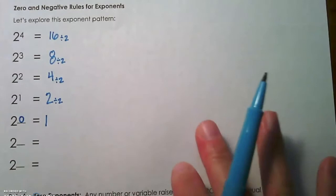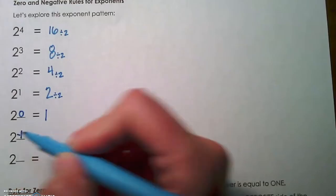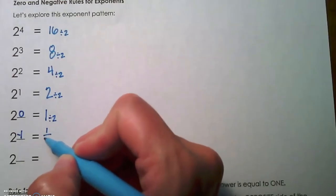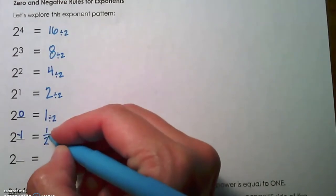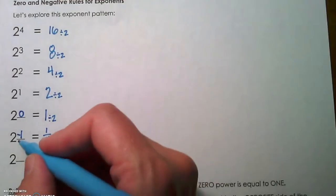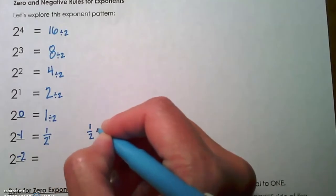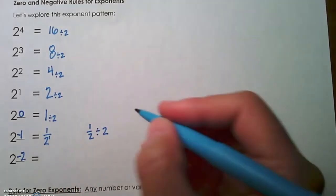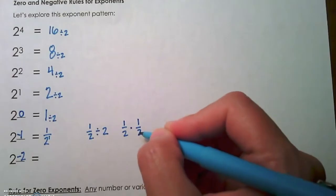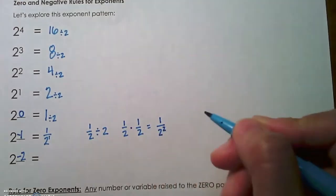That's our rule for 0. We're going to continue by taking away 1 from the exponent, so 0 minus 1 gives us negative 1. We're still going to divide by 2. 1 divided by 2 is just 1 half. Notice that exponent has moved to the denominator and has changed the sign. We're going to take another 1 away from the exponent and have a negative 2. So I'm taking 1 half and dividing by 2, which is the same as 1 half times 1 half, because we multiply by the reciprocal when we divide fractions. That's going to give us 1 over 2 squared, or 1 fourth.